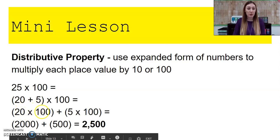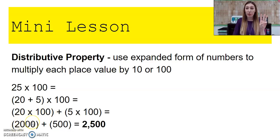So I have 1, 2, 3 zeros. So in my product, when I multiply those numbers together, I should also have 3 zeros. So let's look. So 2 times 1 was 2, then I have 1, 2, 3 zeros.